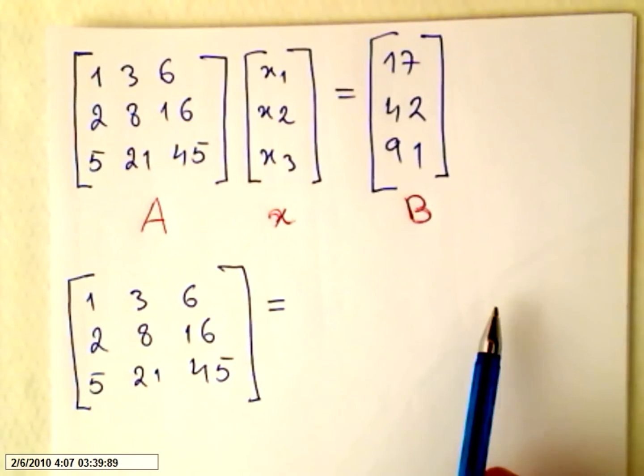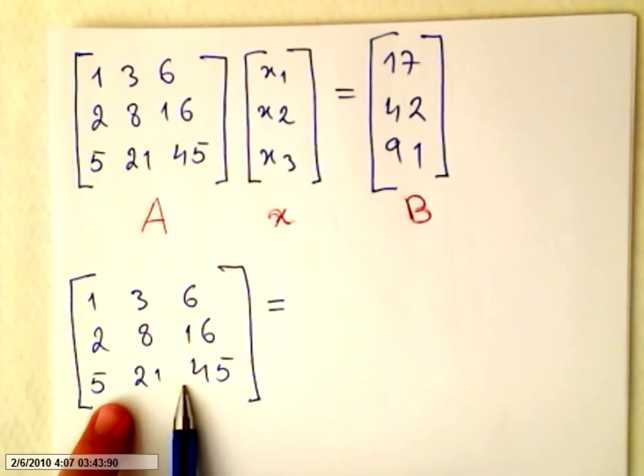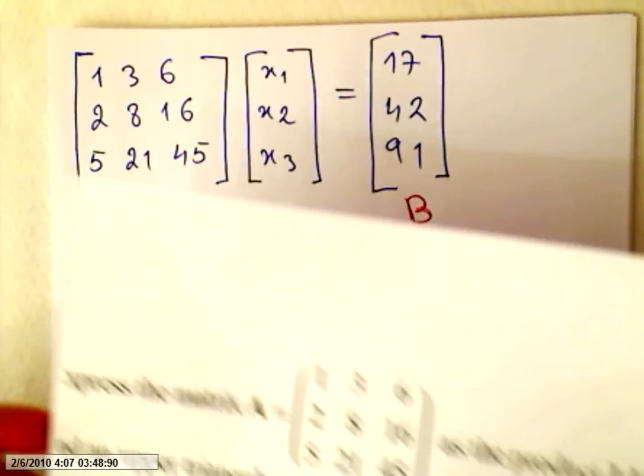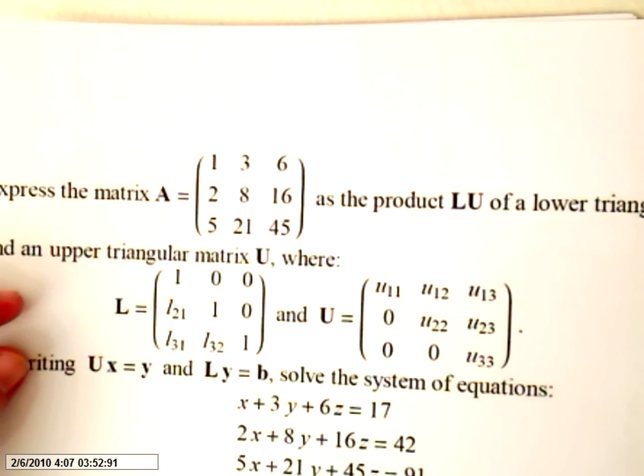Now we are going to make two matrices and the product of those two matrices will be this one. The format, so to speak, of the lower and the upper is this one. It's always the same.